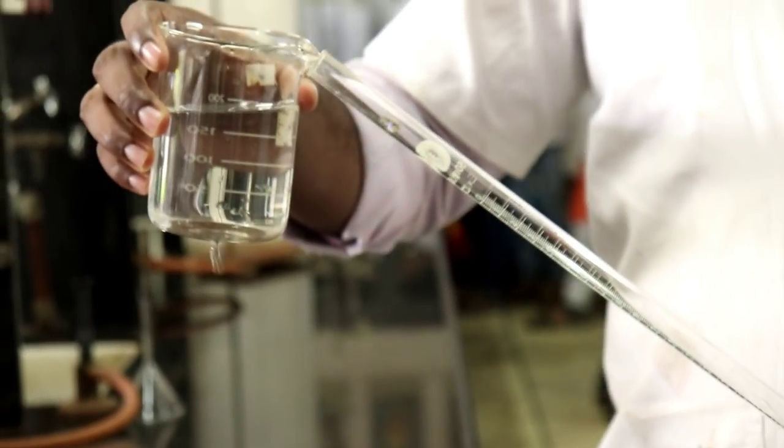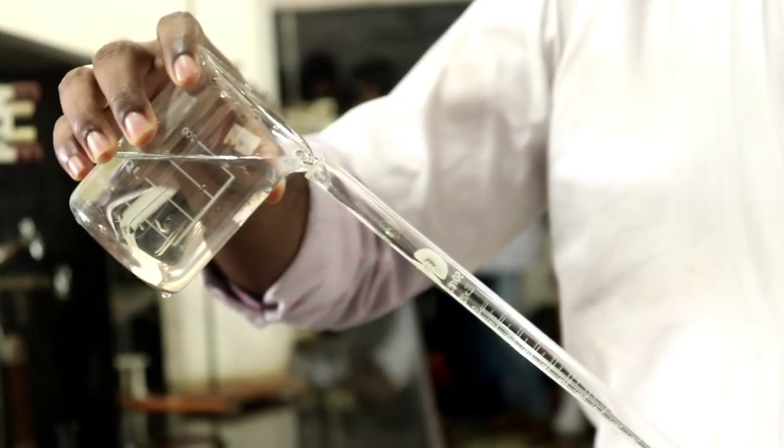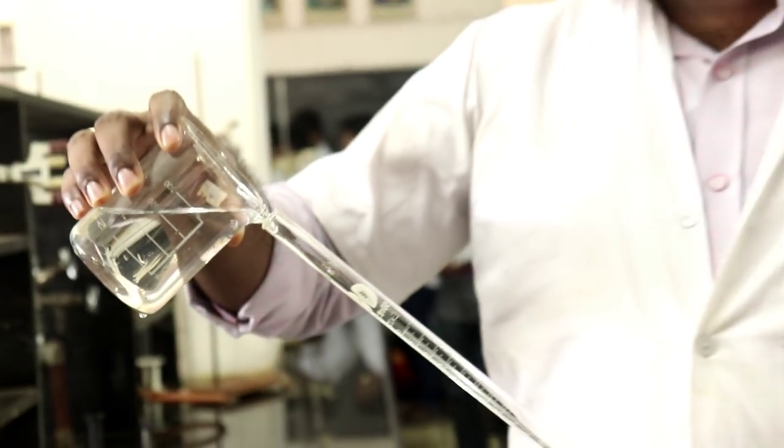The next step is to put some amount of the titrant into the burette and repeat the same steps.